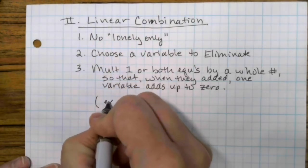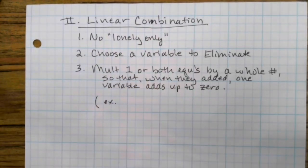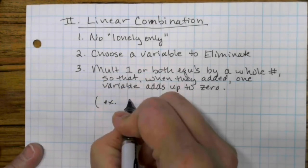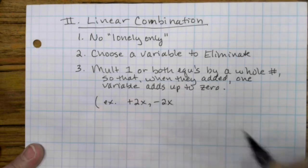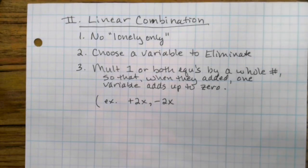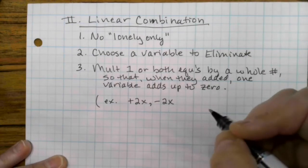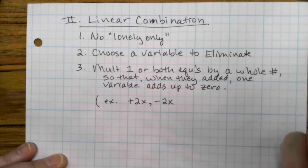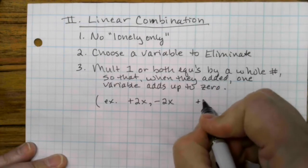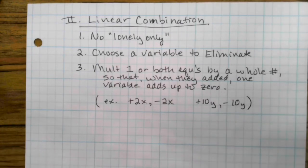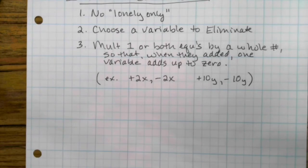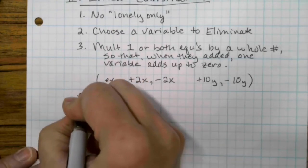So just for example, you would multiply one or both equations so that you might have a positive 2x on one equation and a negative 2x on the other. So they add up to zero. Or maybe you attack the y's first. Multiply both equations by your selected number and you might have a positive 10y and a negative 10y. So when you add the equations, the y's go to zero. All right, let's do an example.